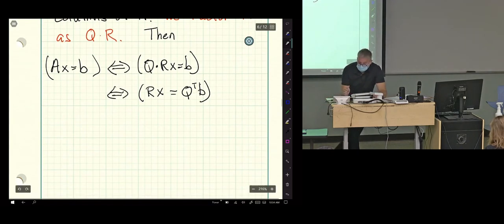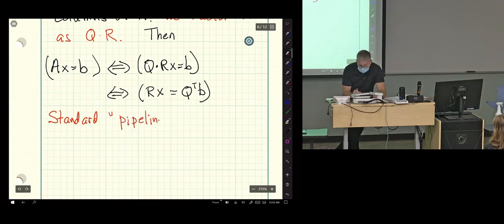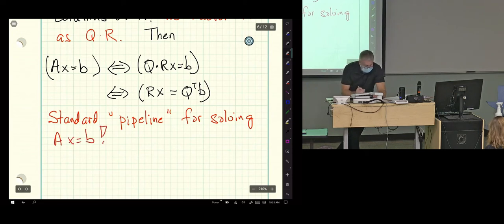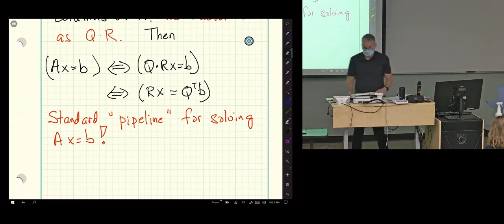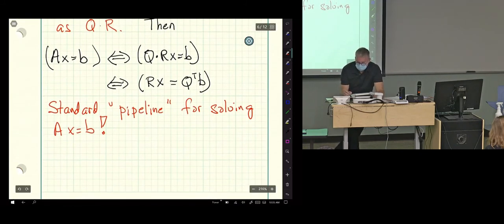This is the suggested pipeline. This is the standard in fact. And CS people like to call that a computational pipeline. The standard pipeline for solving AX equals B. So, first I factor. Then I multiply B by Q transpose. This is upper triangular. So, I use back substitution. And then I'm done.